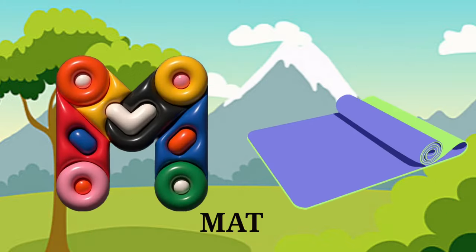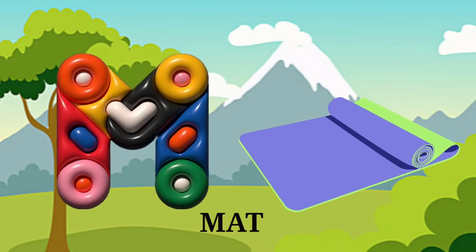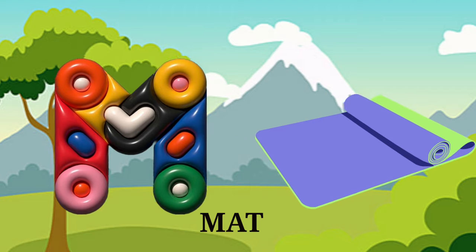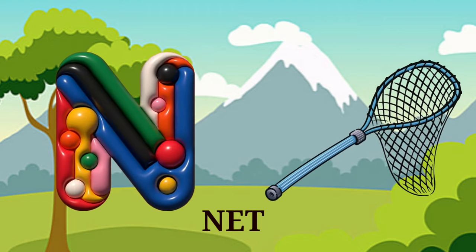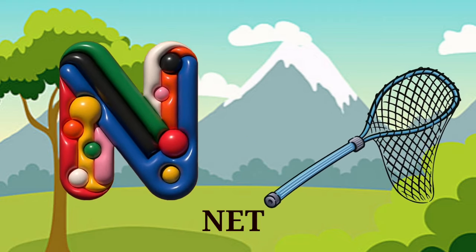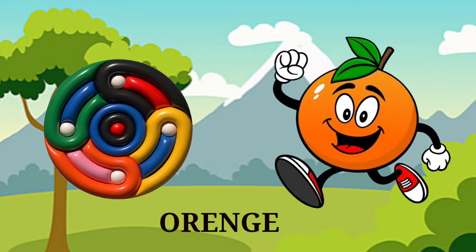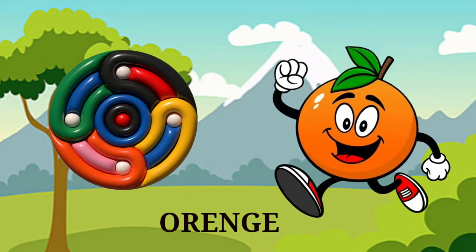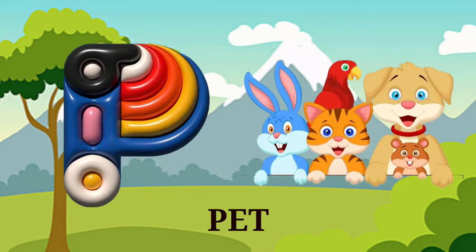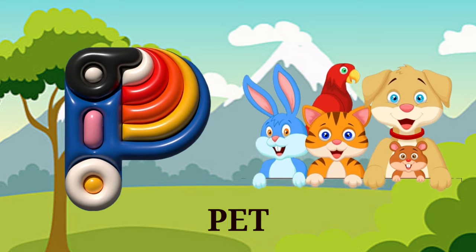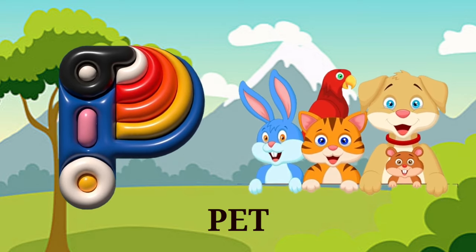M is for mat, m-m-mat. N is for net, n-n-net. O is for orange, o-o-orange. P is for pet, p-p-pet.